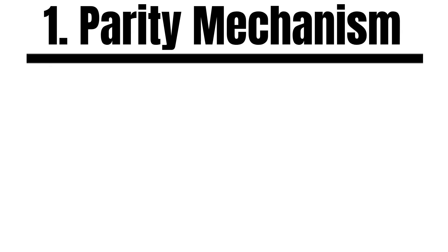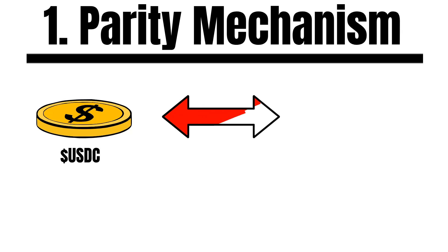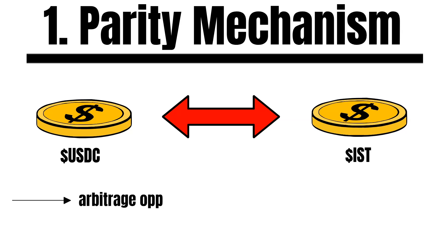The first way to mint IST is the most straightforward one. Users can provide a high-quality stablecoin, such as USDC, and receive IST in exchange for it. A smart contract powers this concept. It also creates arbitrage opportunities that users can take advantage of whenever IST gets traded below $1. This is also how IST can re-peg to $1 again when the price is slightly below $1.